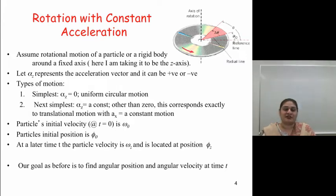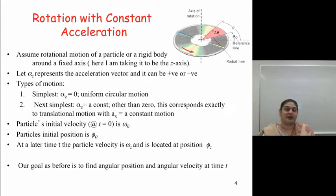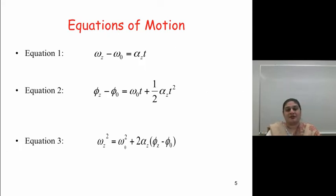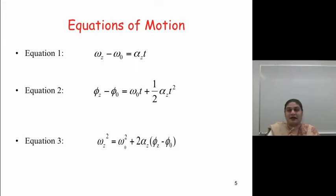We assume the particle's initial angular velocity at t = 0 is ω₀ and its initial position is φ₀. Our goal is to find all angular positions and angular velocities at all times after these initial conditions. Importantly, these equations of motion will hold only for constant acceleration cases and will look remarkably similar to the equations for linear motion.